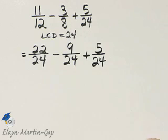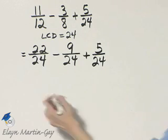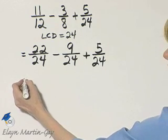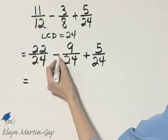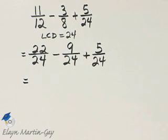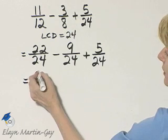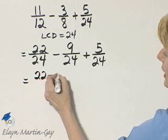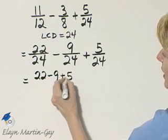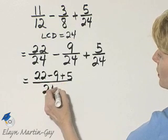Now notice, since I have common denominators, I can simply add and subtract from left to right. It will be 22 minus 9 plus 5 all over 24. Let's write that. 22 minus 9 plus 5 all over 24.